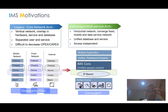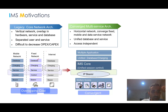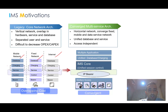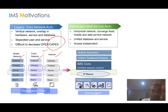What are the motivations for the emergence of IMS? Before IMS, we had many vertical networks — fixed networks, the internet, mobile networks — each with different costs, overlapping hardware, services, and databases, with separate user and service management. As a result, CAPEX — capital expenditure — and OPEX — operational expenditure — were very high.